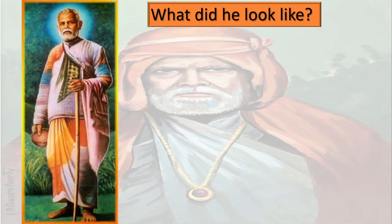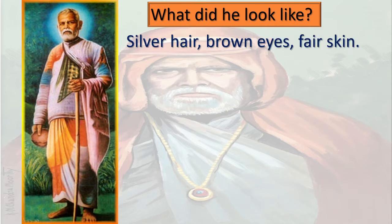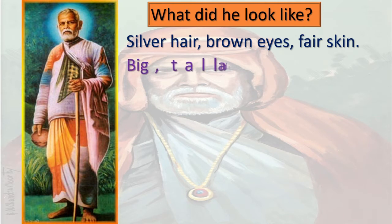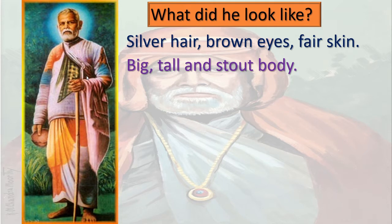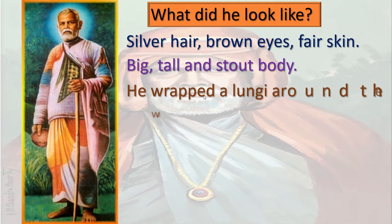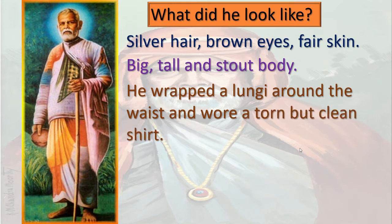What did he look like? He had silver hair, brown eyes and fair skin, and a big, tall and stout body. He wrapped a longi around the waist and wore a torn but clean shirt.